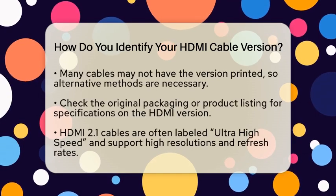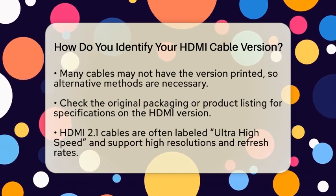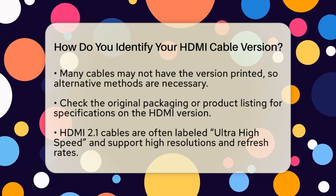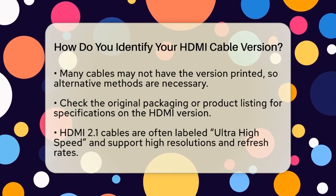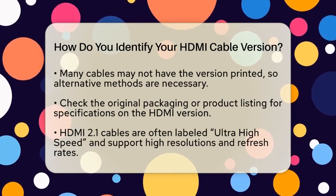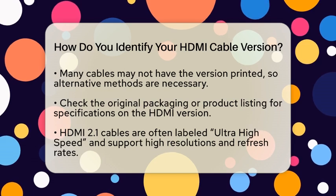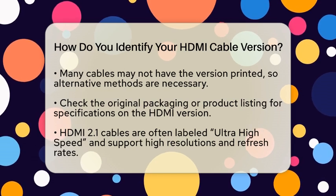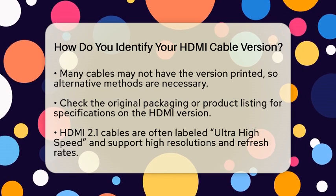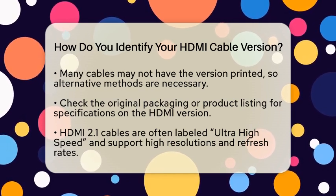To identify your HDMI cable version, start by checking the cable itself. Some cables have the version number printed directly on the connector or along the cable. However, many cables do not include this information, so you might need to look elsewhere. If you still have the packaging or product listing, take a look there. Manufacturers often specify the HDMI version and supported features.